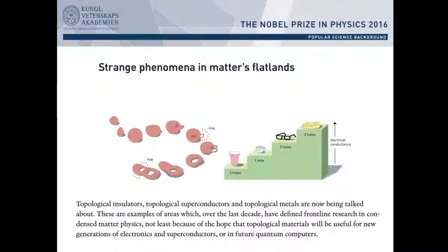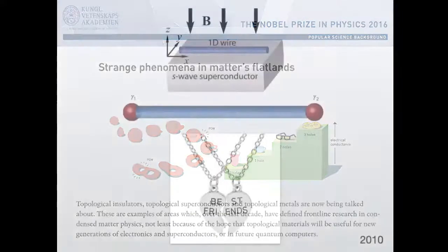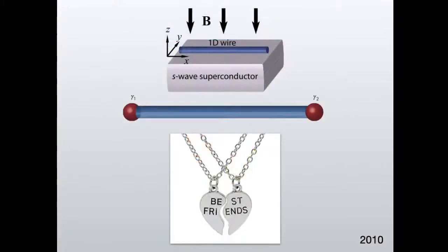That is, you can't decohere the system in its intrinsic form. You don't have to be smart about removing errors. The system itself is intrinsically immune to errors. That's a very attractive idea. And something which, among others, the Nobel Committee has recognized, if I read to you from the 2016 Nobel Prize, topological insulators, topological superconductors, and topological metals are now being talked about. These are areas which, over the last decade, have defined front-line research in condensed matter physics, not least because of the hope that topological materials will be useful for a new generation of electronics and superconductors, or in future quantum computers. And it was that idea that was so amply rewarded and has generated so much activity.